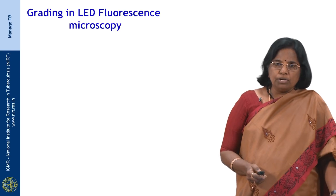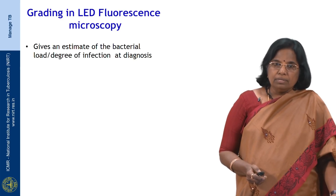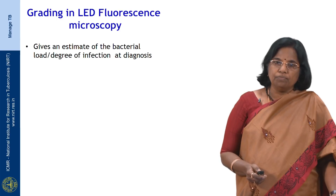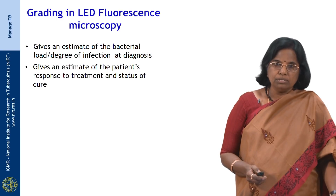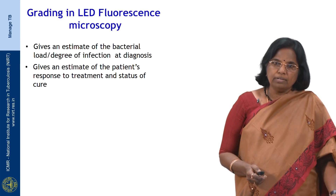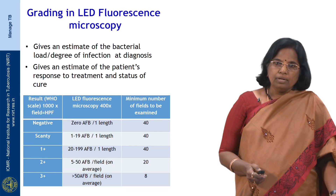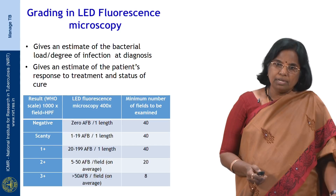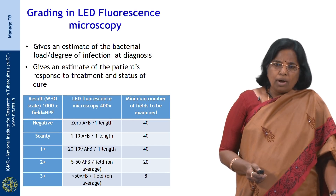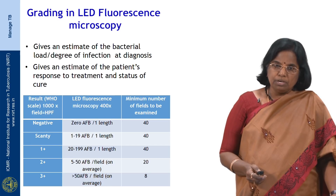The smear is always reported using grading. Grading gives an estimate of the bacteriological load or the degree of infection at the time of diagnosis. It also gives an estimate of the patient's response to treatment during follow-up and the status of cure. One length of the smear is equal to 2 centimeters of the smear, which roughly has about 40 to 50 fields.